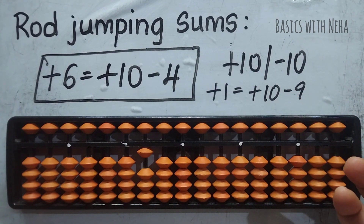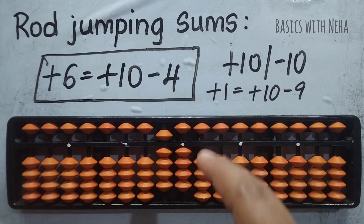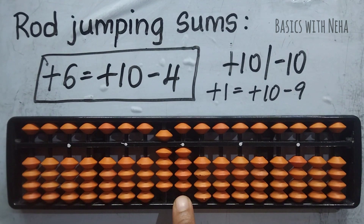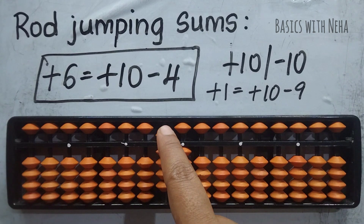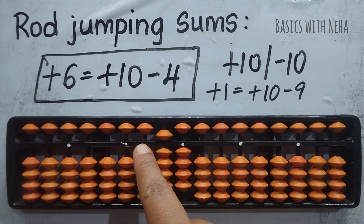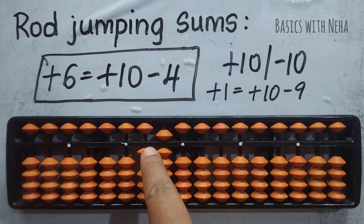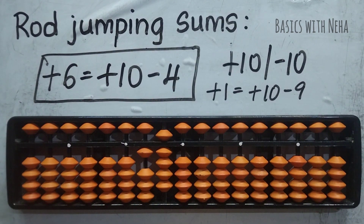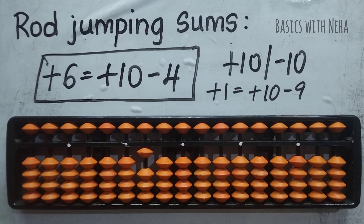What exactly is rod jumping then? I have 94. I will see that if I can add 6 or not — it's very clear that I cannot. So I will use the big friends formula which is plus 10 minus 4. To do plus 10, the beads are not available, so I am just going to jump this rod and add 10 on the next rod, and minus 4 here. I did plus 10 minus 4, and remember that you have jumped this rod. When you have jumped this rod, you are going to remove everything from the jumped rod.